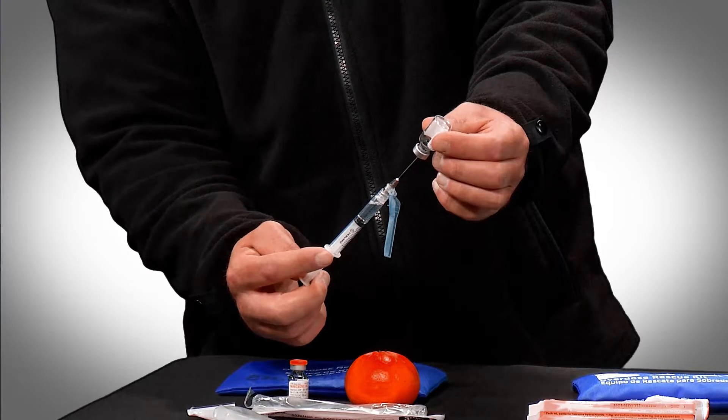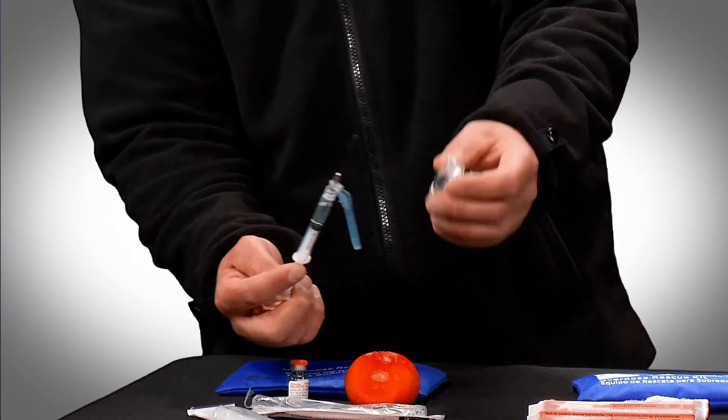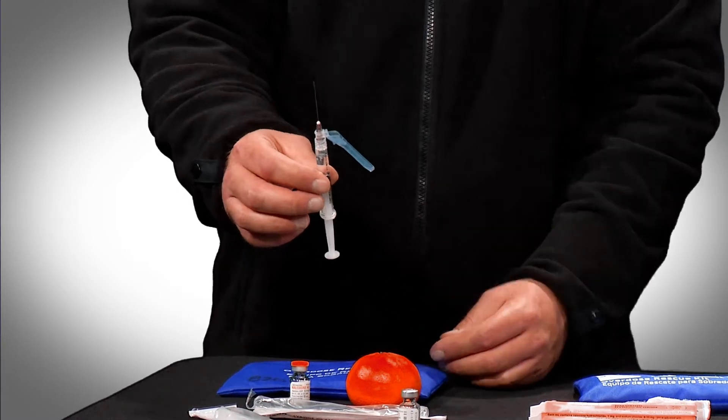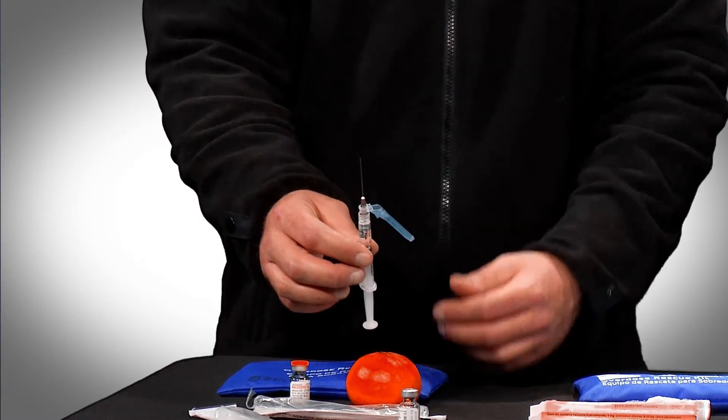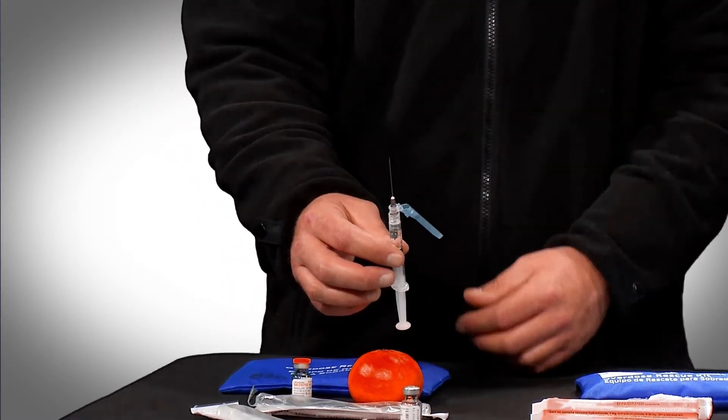Since this is an intramuscular injection, it's not going to matter if there's air in the syringe. This injection is going to go into a person's shoulder or the front of their thigh.